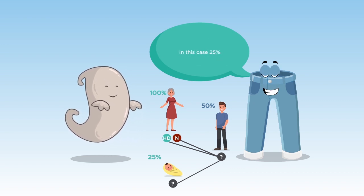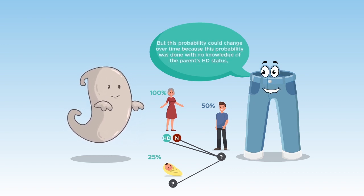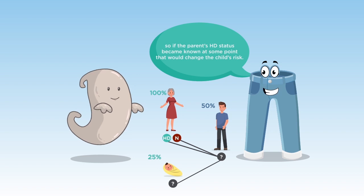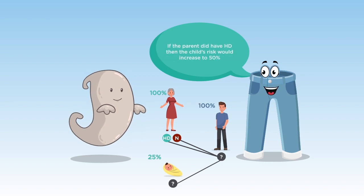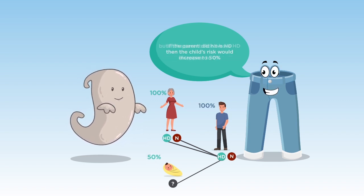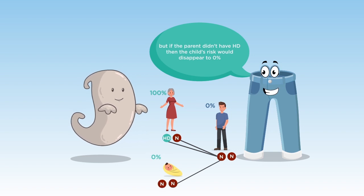But this probability could change over time because this probability was done with no knowledge of the parent's HD status. So, if the parent's HD status becomes known at some point, that would change the child's risk. If the parent did have HD, then the child's risk would increase to 50%, but if the parent didn't have HD, then the child's risk would disappear to 0%.